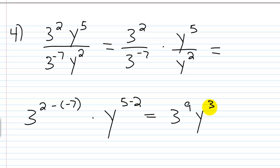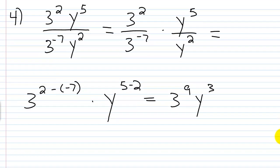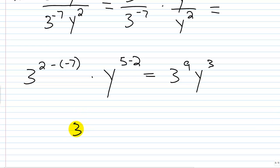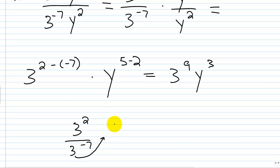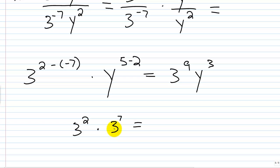That's very important — remember what we're doing here. When you have 3 squared over 3 to the power of negative 7, the exponent on top is positive and the exponent on the bottom is negative. That negative exponent in the denominator moves to the numerator and becomes positive. So 2 minus negative 7 gives 3 to the ninth power.